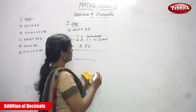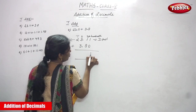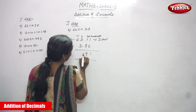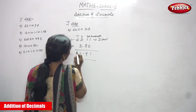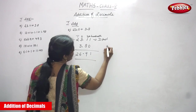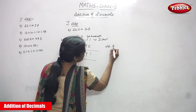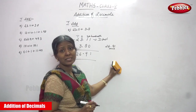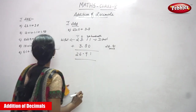Then you have to add. Look at this: 1 plus 0, write 1. 8 plus 1 is 9. And 3 plus 3 is 6. And 2. The answer is 26.91. This is the answer for the question.